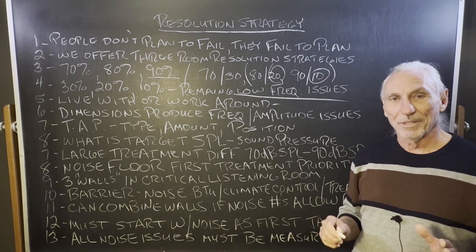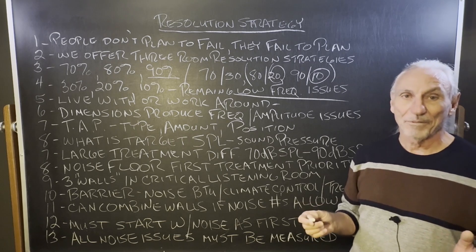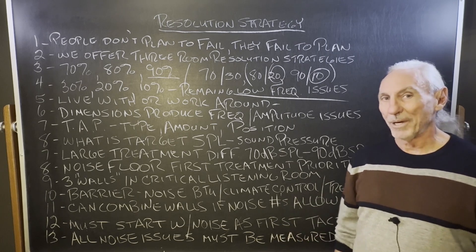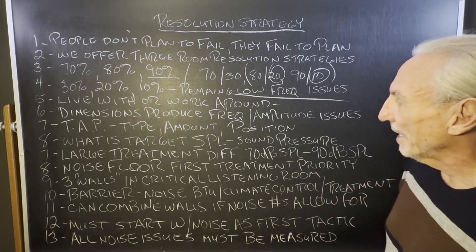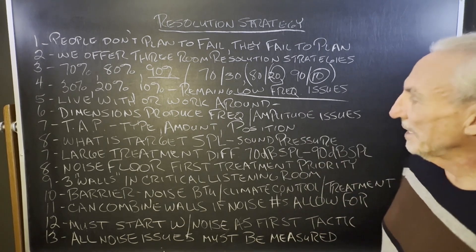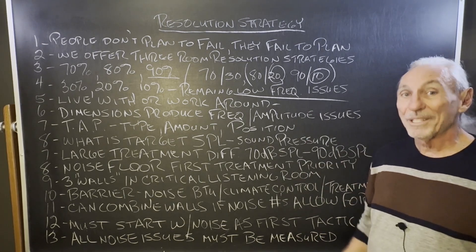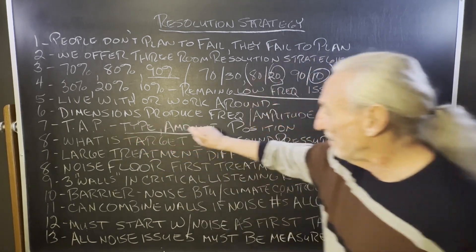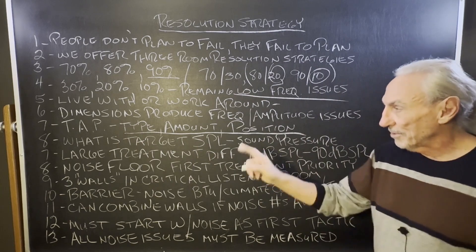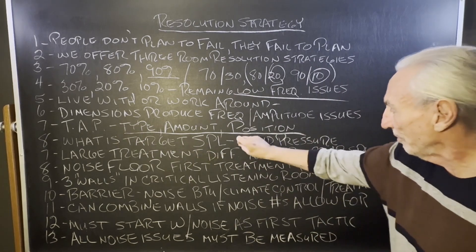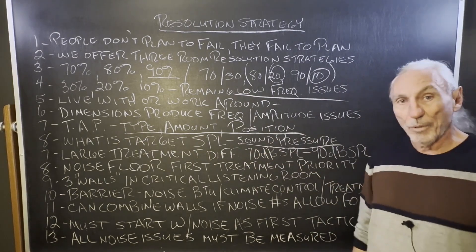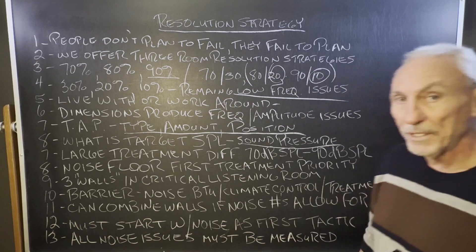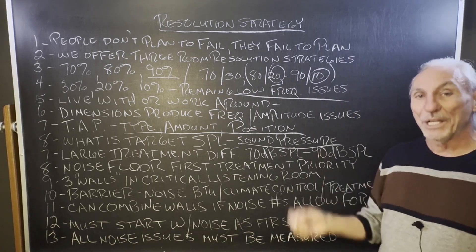Mixing is a creative endeavor. Listening to music is a creative endeavor. The least hassles that you have to face in a creative endeavor, the better you are. Dimensions produce the frequency and amplitude of issues — it's not your fault, it's the room dimensions that are the fault. So we have to choose the right type, amount, and position of treatment. It's called TAP. We also have to know what your target SPL is — what pressure level you're going to work at in this room — in order to achieve the resolutions we're targeting.